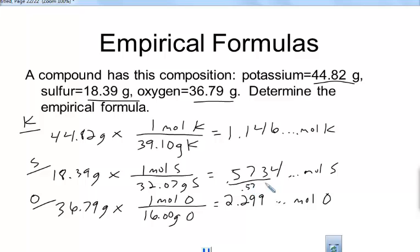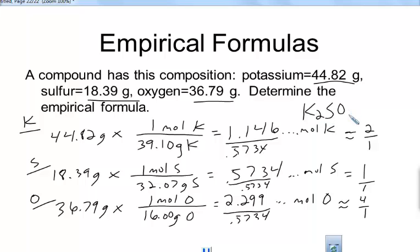In this case, 0.5734 is our smallest amount. So that will give me a one-to-one ratio. If I do it here, 0.5734, I'm going to get approximately, it's not always perfect, but it's really close to a whole number, a two-to-one ratio. And it would be closer if we carried all these numbers out. It's close to a whole number. And this is really close to a four-to-one ratio. So what's the empirical formula? K2SO4 is the empirical formula of this compound.